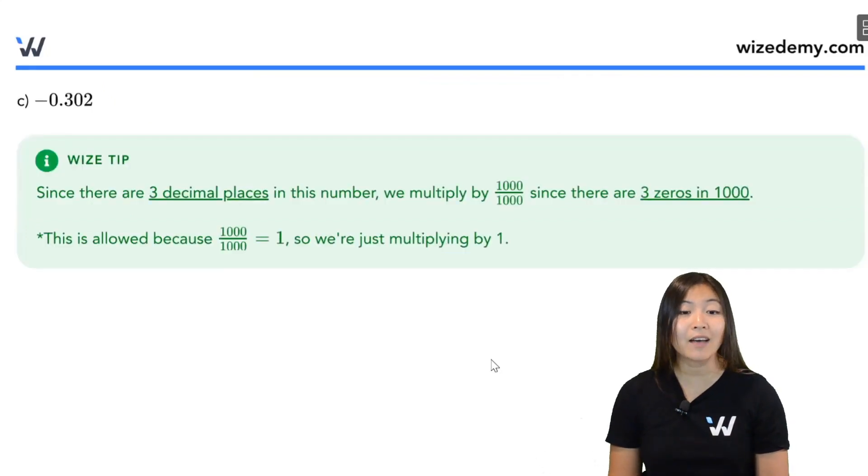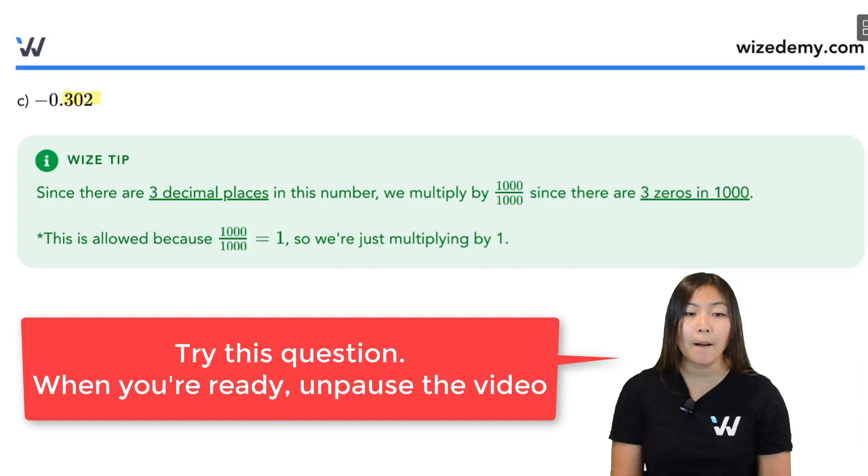All right, part C, I have a decimal here. And again, you're going to count the number of decimal places. 1, 2, 3. So give this question a try. Multiply it by some number over some number, and see if you can rewrite it as a quotient of numbers.